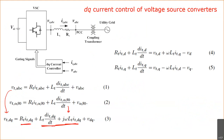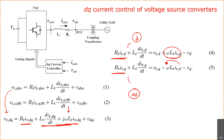When you expand the DQ-frame equations, you obtain two equations — one for the D-axis and one for the Q-axis. In the D-axis equation, there is a Q-axis variable present, and in the Q-axis equation, a D-axis variable appears. This means these two axes are coupled: when you try to control the D-axis, the result depends on Q-axis quantities.